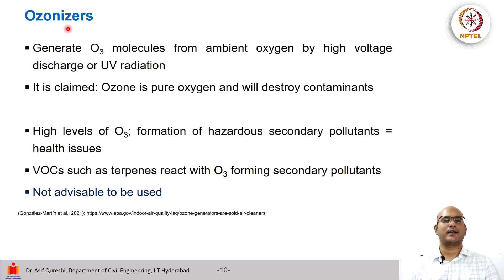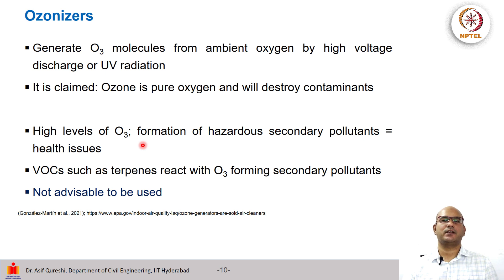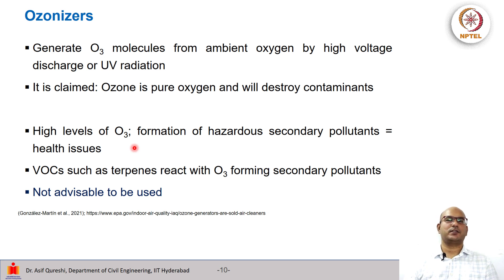Then we have ozonizers, which generate ozone molecules from ambient oxygen by high voltage discharge or UV radiation, and they claim that ozone is essentially pure oxygen and will destroy contaminants. However, the issue is that high levels of ozone can lead to the formation of hazardous secondary pollutants, resulting in health issues. Volatile organic compounds such as terpenes can react with ozone to form secondary pollutants. In general, it is not advisable to use ozonizers due to potential chemical reactions and health impacts from higher ozone levels indoors.